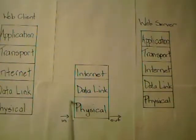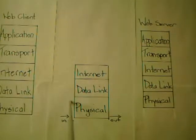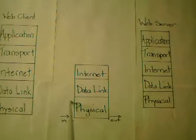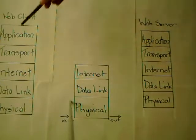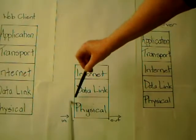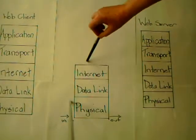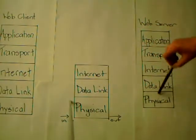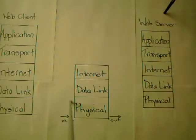This video is a demonstration of how a web client — our PC over here — is going to send a request for a web page through the TCP/IP stack. It will pass through the router and eventually end up in the application layer of the web server.